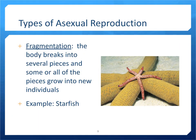Another type of asexual reproduction is called fragmentation. This is when the body of a multicellular organism breaks into several pieces, and each piece can grow into a new individual. Starfish are able to do this — if you break an arm off a starfish, the starfish can grow its arm back, and the arm that broke off can also grow into a new starfish.